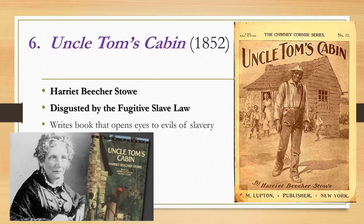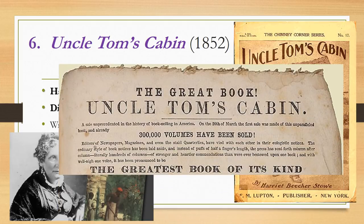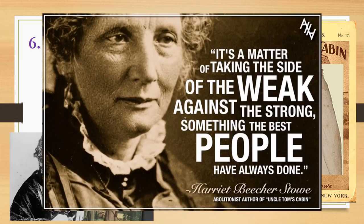The sixth step is one you may already know about — the publication of Uncle Tom's Cabin in 1852. Harriet Beecher Stowe, the author, had been so disgusted by the Fugitive Slave Law that she felt compelled to do something about it. That gave her the motivation to write this novel, a book that opened the eyes of many to the evils of slavery. The book was a tremendous hit and influenced many to support abolition, convincing thousands that not only was slavery wrong but it should be ended in the country for good. Harriet Beecher Stowe is known for saying, 'It's a matter of taking the side of the weak against the strong, something the best people have always done.'